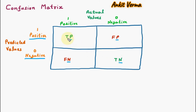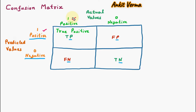Now just focus on T and F — these are the true and false. True and false are the outcome of actual values. Now we are understanding the parts of the confusion matrix. The first is TP, which means true positive. This cell belongs to positive in the predicted values and positive in the actual values. That means prediction is positive and the actual value is also positive.